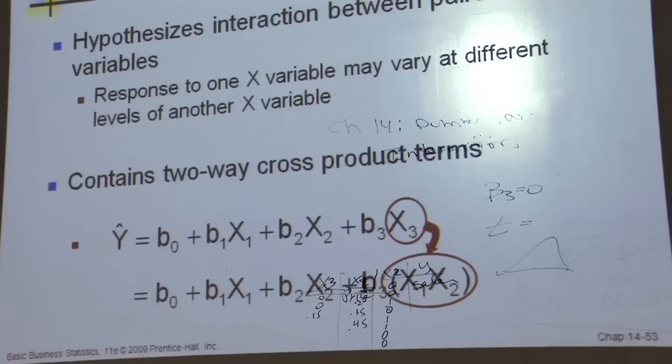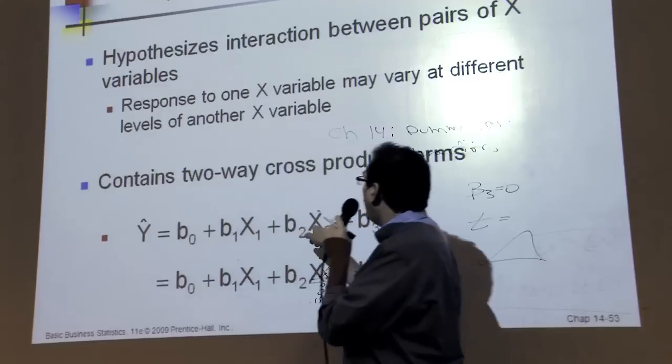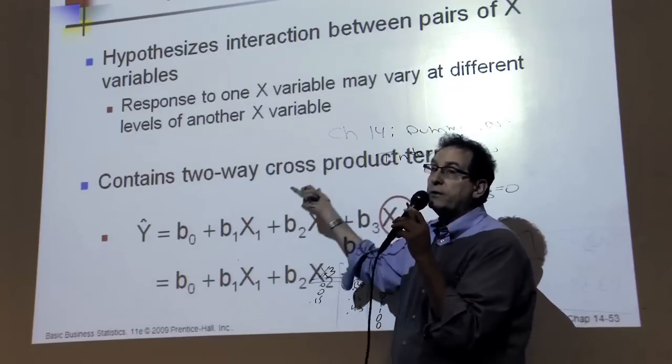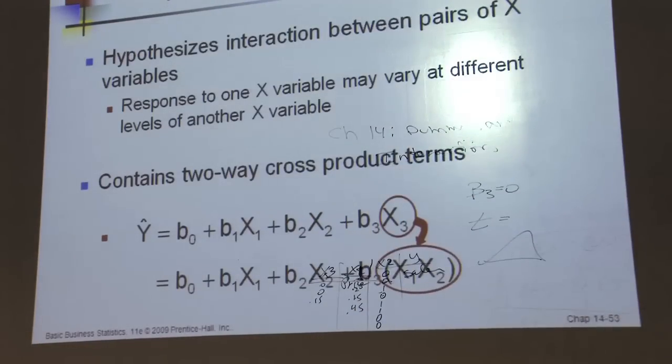And of course, that involves a more complicated interpretation of what impact does x1 have. In other words, you can't, we've had this in Chapter 11, by the way, that the impact of one variable can't be explained unless you qualify it or associate it with the joint impact of the other variable, so you'd have to say, yes, x1 has an impact on sales, but only if x2 is equal to 0. When x2 is equal to 1, there's a different kind of an impact. That would be roughly an example of an interaction.